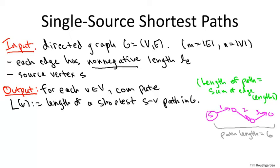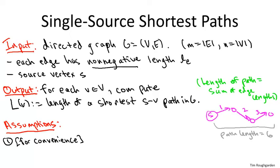I'm going to make two assumptions for these lectures. One is really just for convenience; the other is really important — it's the assumption without which Dijkstra's algorithm is not correct. For convenience, we'll assume there is a directed path from S to every other vertex V in the graph. Otherwise, the shortest path distance is defined to be plus infinity. You could detect unreachable vertices in a preprocessing step using breadth-first or depth-first search.